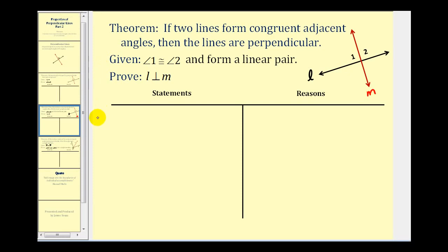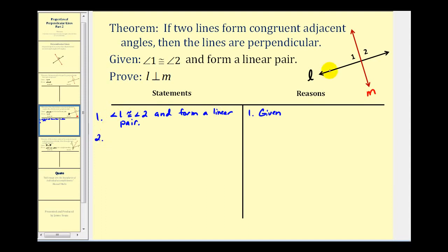We'll start by stating the given: angle one and angle two are congruent and form a linear pair. This is given. So if we know these two angles form a linear pair, we know their measures must have a sum of one hundred eighty degrees.